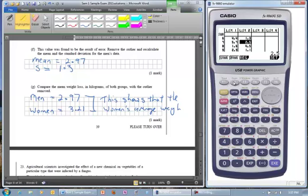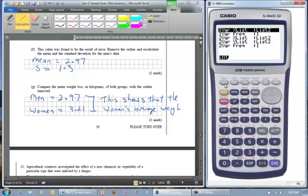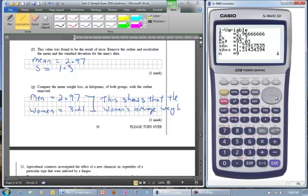Then we can come back here and go calculate again. Let's just check to see what we are doing, we are doing list 2 which is the men's. So now what happens is our mean goes to 2.96 or nearly 3, 2.97. And the women's is 3.21. It shows that the women's average weight loss is better.